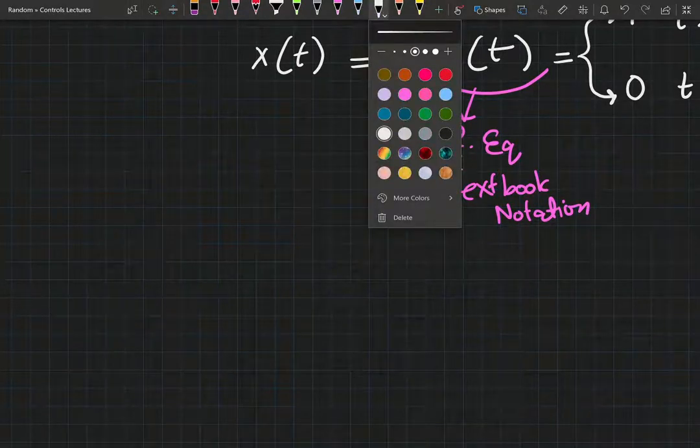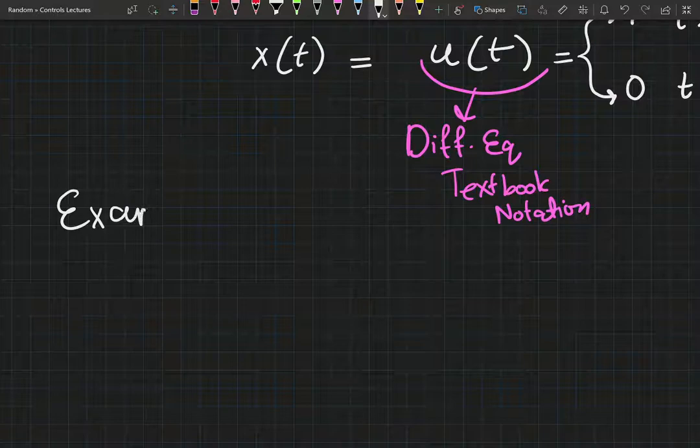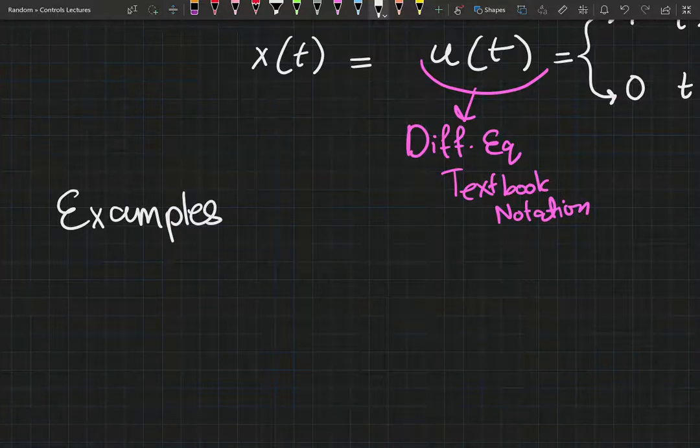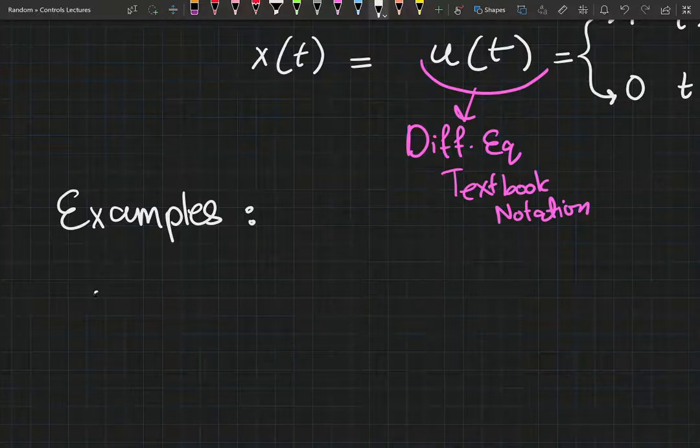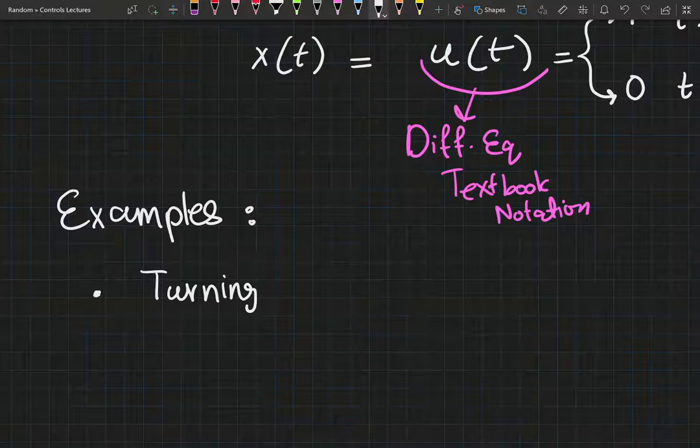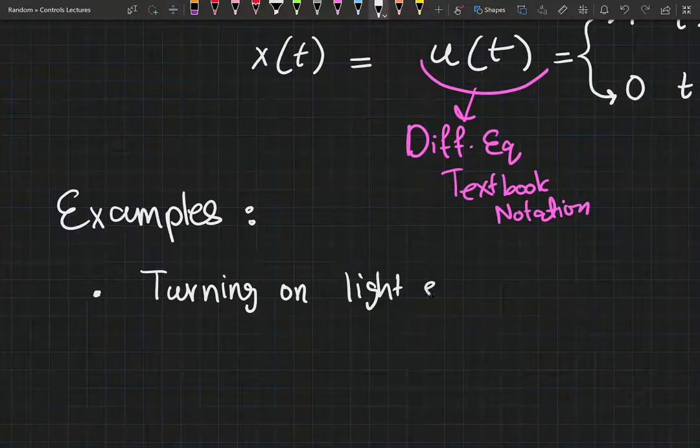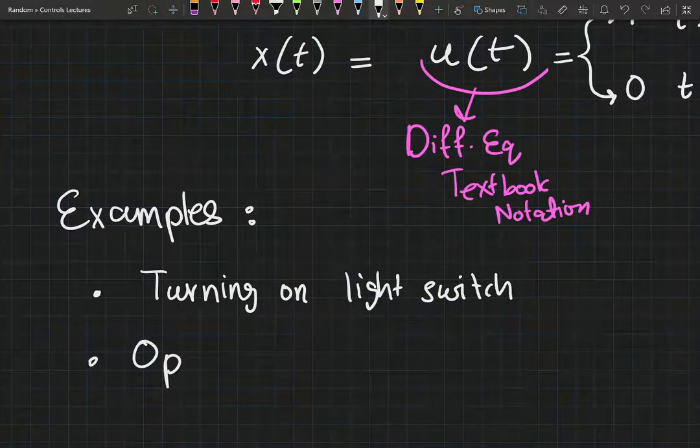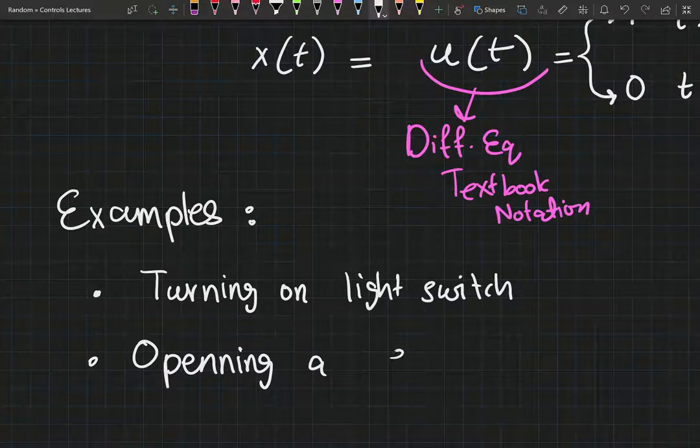And let's just list some examples, real life processes that can be modeled via a step function. We've already talked about turning on a light bulb, turning on a light switch.